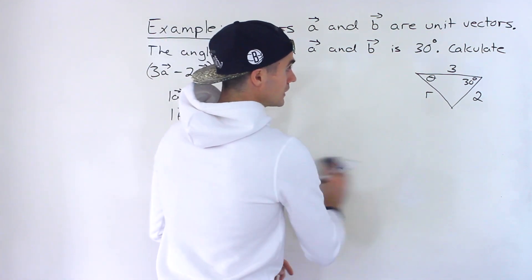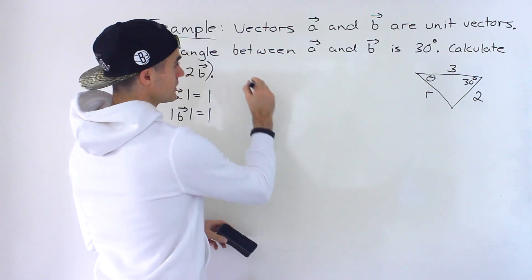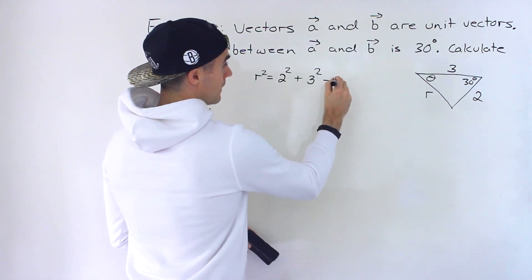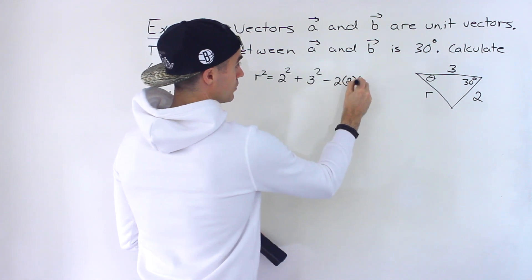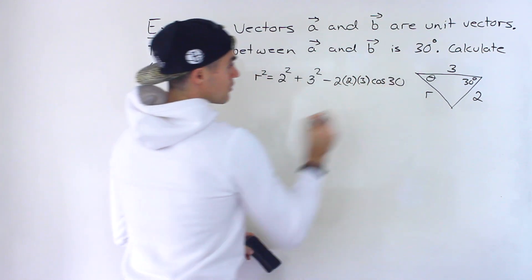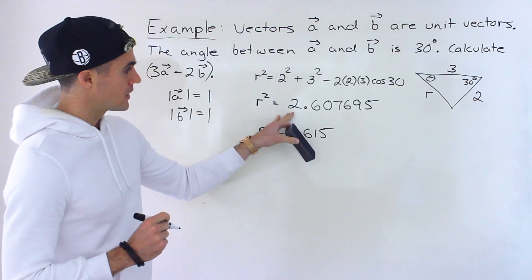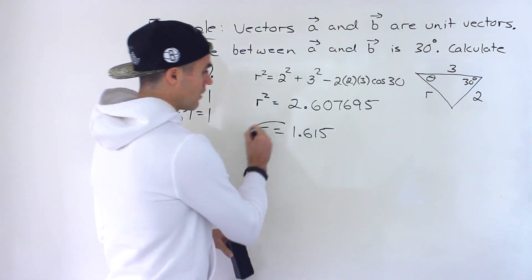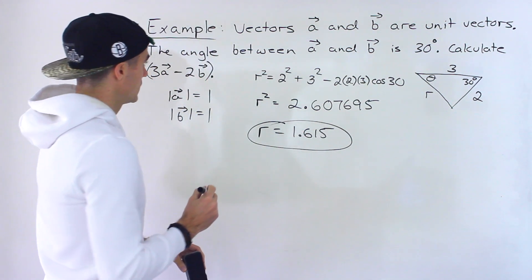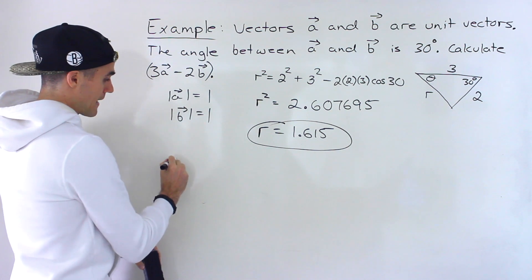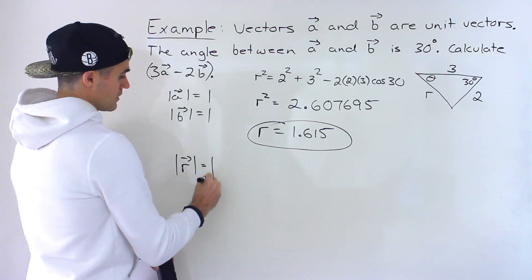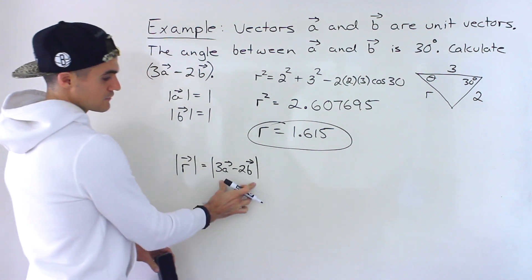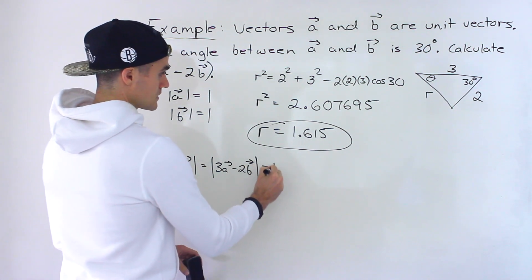Let's solve for R first using the cosine law. R squared equals the sum of the sides squared minus two times both sides times cosine of 30. When you do those calculations, you end up getting 2.607695 equal to R squared. Square rooting both sides, we end up with R equaling 1.615. So that's going to be the magnitude of the resultant vector — 1.615.